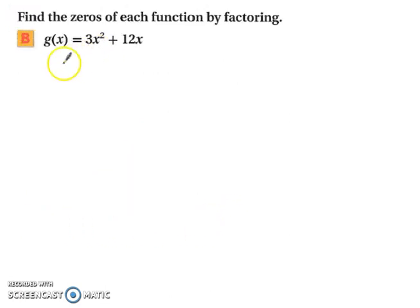Let's try this next one. So we have our 3x squared plus 12x, and we're going to set that equal to 0 because we're trying to find the zeros. And for this one, we don't have a trinomial, but we do have a common set of factors that we can take out. So we can factor out a 3x, because 3x is our greatest common factor, which leaves us with x and then plus 4.